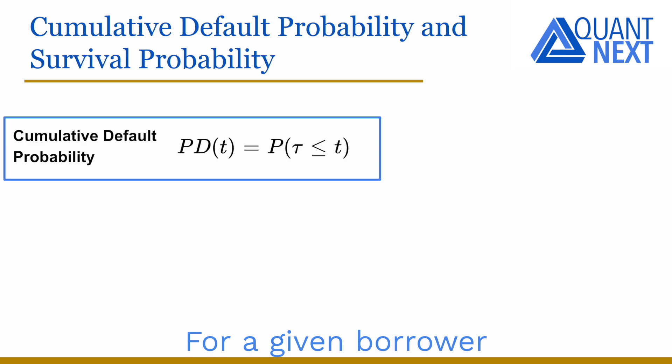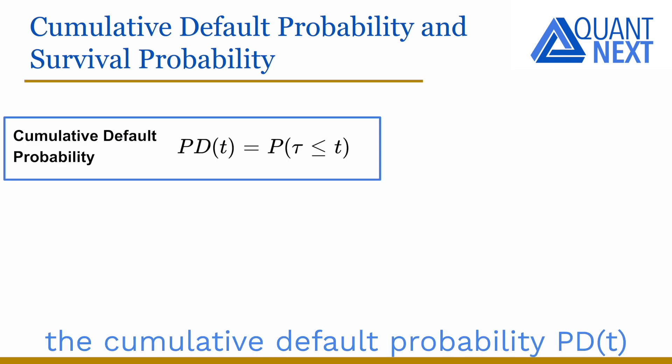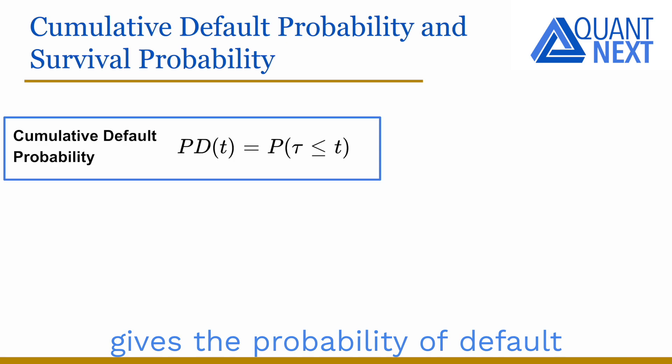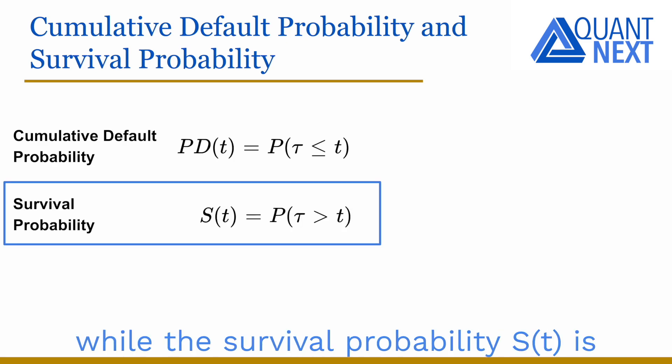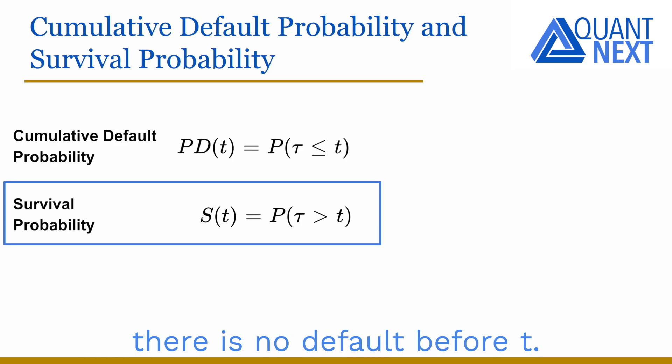For a given borrower, the cumulative default probability PD gives the probability of default between 0 and t, while the survival probability S is a probability that there is no default before t.